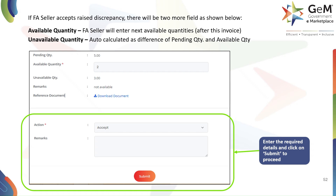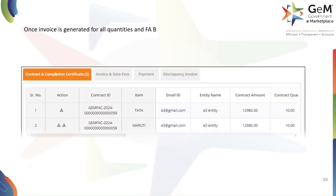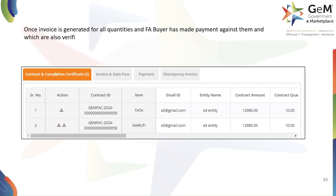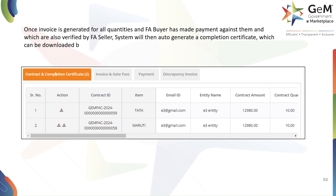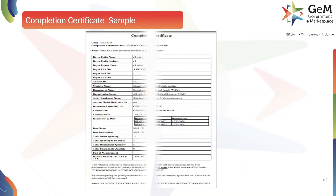Once all invoices for the contract are successfully generated and the buyer has made all payments, the GeM system will auto-generate a completion certificate. This certificate can be downloaded by both the buyer and the seller from the Contract and Completion Certificate tab — simply click on the download icon next to the contract ID. This is a sample of the automatically generated completion certificate, which acts as the final official record of the contract's fulfillment. The document contains all the crucial information, including the total quantity to be picked and the final unavailable quantity.